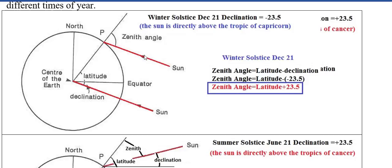The sun is so far away that by the time the sunlight reaches the earth, all of the rays hitting the earth are essentially parallel to each other. So the latitude plus the declination is the same as the zenith angle. For the winter solstice, the zenith angle is the latitude plus 23.5 degrees.